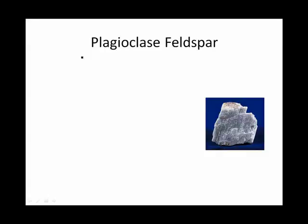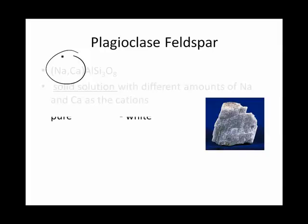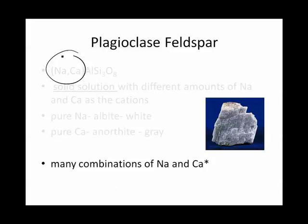Another important feldspar is plagioclase feldspar. Instead of potassium, we have either sodium or calcium. Once again, this is a solid solution, with different amounts of sodium and calcium, depending upon the specific kind of feldspar. If, for example, it's only sodium, you have albite, or a totally white feldspar, and if it's all calcium, you have anorthite, which is gray. But there are many combinations of sodium and calcium in between, giving us many other flavors.